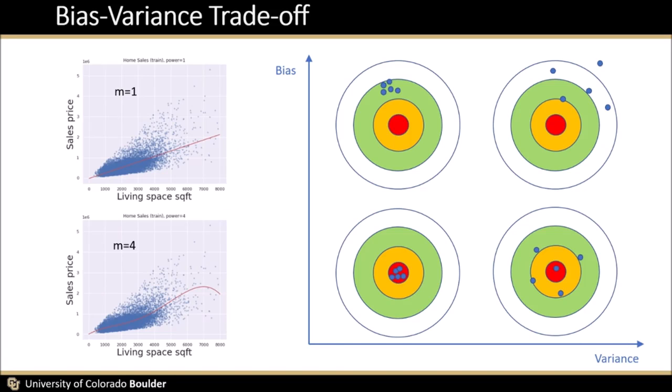Simpler model tends to have a high bias and low variance. And more complex or flexible model tend to have a lower bias, but has a higher variance. In machine learning, a lot of models are either this case or this case. So there is a trade-off between the two, that's where the bias-variance trade-off coming from.